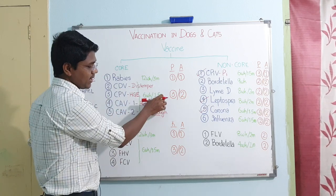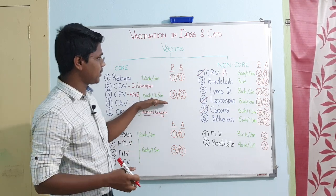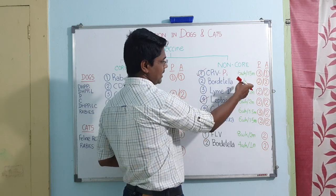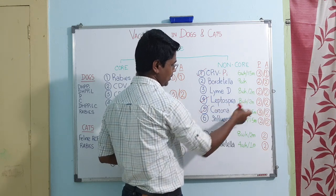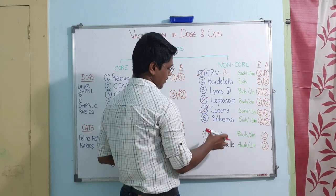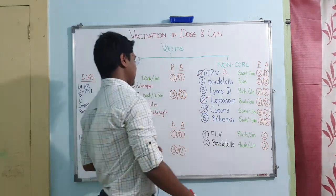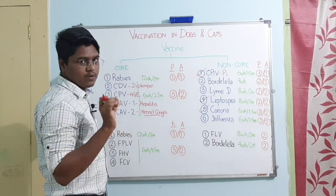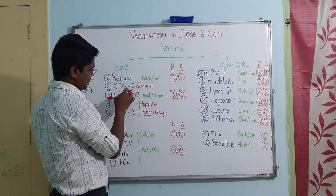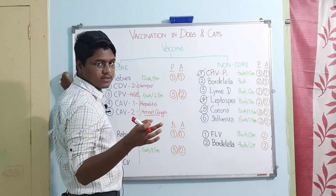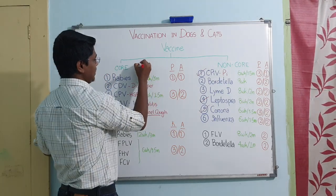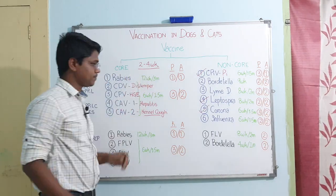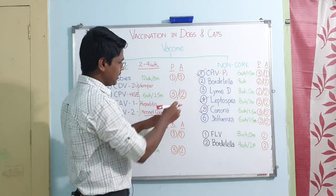For distemper, parvo, and adenovirus, vaccination starts at six weeks or 1.5 months. For non-core vaccines, parainfluenza starts at six weeks, Bordetella at nine weeks, Lyme disease at eight weeks or two months, Leptospira at eight weeks, corona at six weeks, and influenza at six weeks. For rabies, a single shot is sufficient whether for a puppy or adult. For distemper, parvo, and adenovirus in puppies, three doses are needed. For adults, two doses are needed. The interval between doses is mostly two to four weeks.